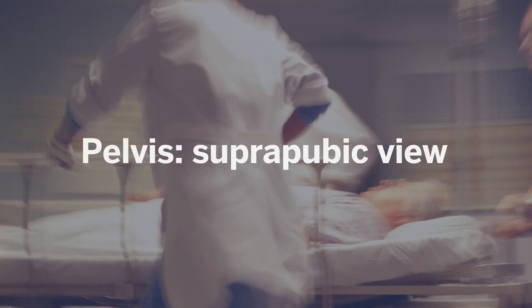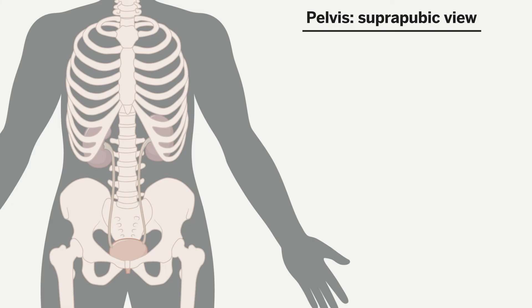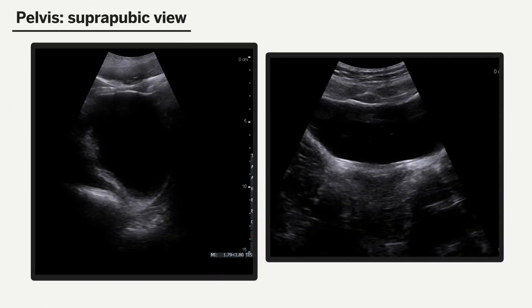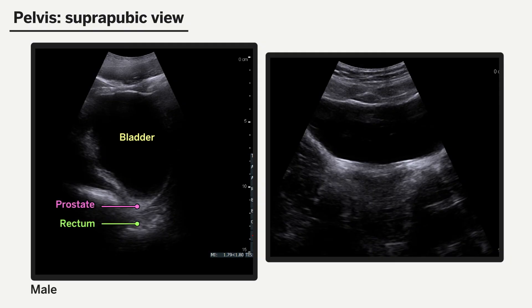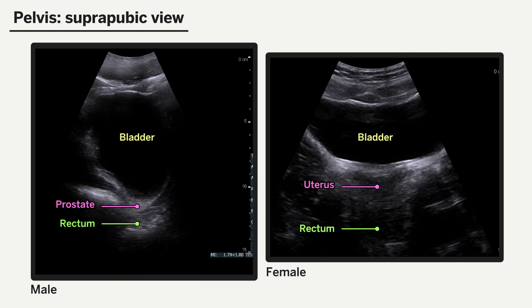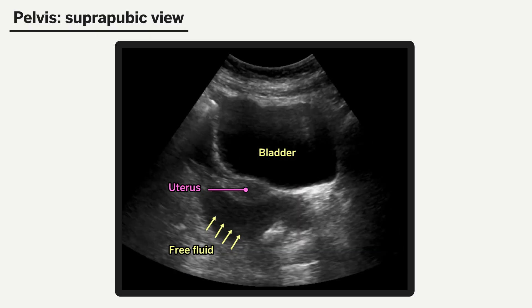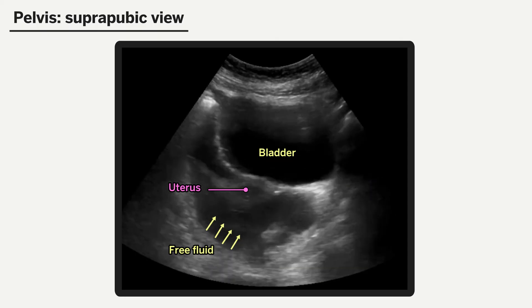Finally, the pelvic scan will assess for fluid in the suprapubic region. To obtain this view, we place the probe right above the pubic symphysis with the indicator facing to the patient's right. Ideally, the patient would have a full bladder to act as an acoustic window, and the probe should be tilted caudally to scan deep into the pelvic cavity. In this view, we should be able to identify the bladder, prostate, and rectum in males; and in females, the bladder, uterus, and rectum. In males, fluid tends to accumulate in the rectovesical pouch, whereas in females, fluid collects in the rectouterine pouch, also known as the pouch of Douglas. In this example, we can see free fluid accumulating in the rectouterine pouch as indicated by the yellow arrows, possibly indicating a ruptured ectopic pregnancy in this patient.